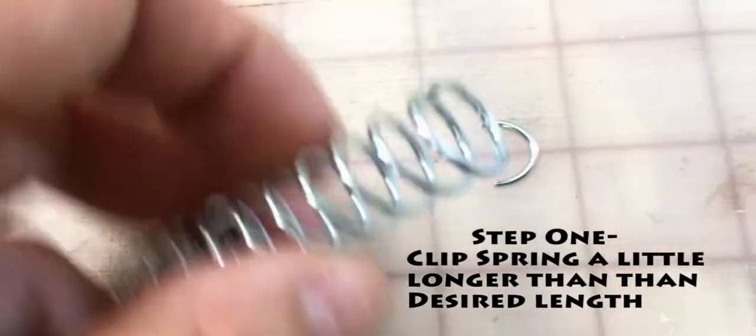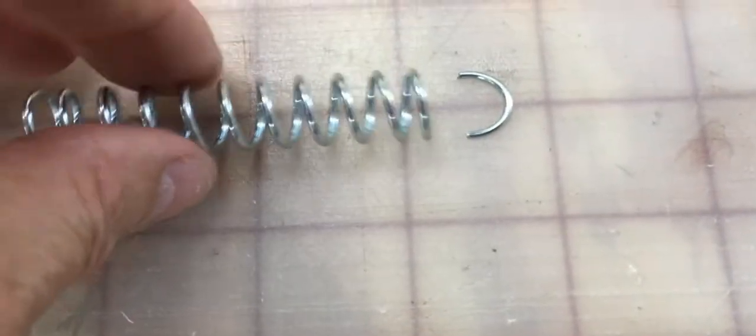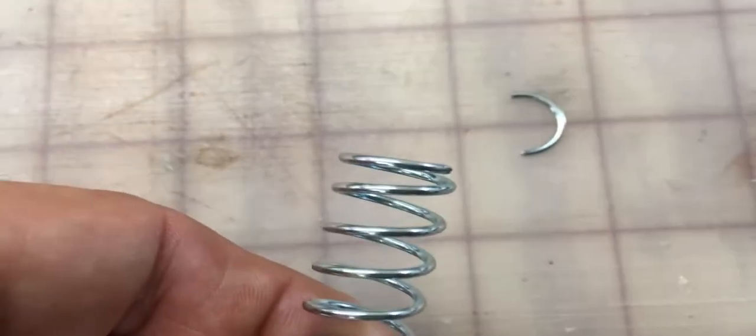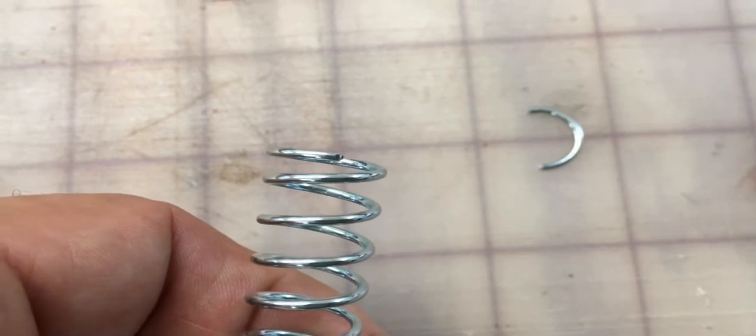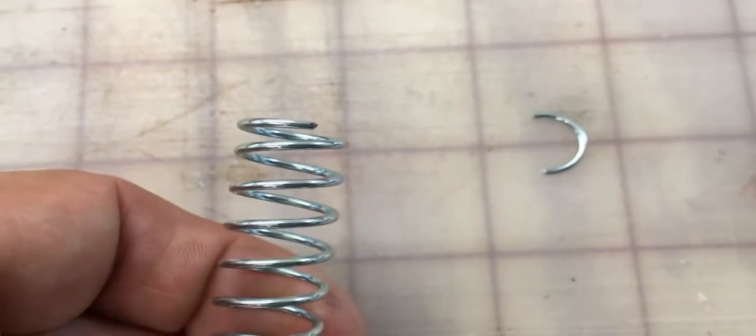All right, so here's the spring. I just snipped about a half a coil off. Some guys pop them in the rifle the way it is, but I am going to smash it down a little bit and grind that flush.